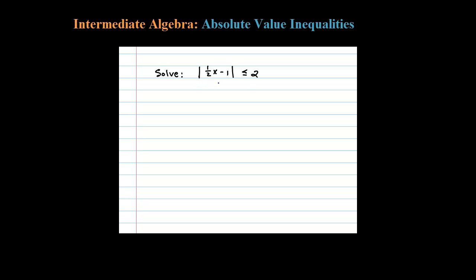We're asked to solve this absolute value inequality. Using case 2 of the theorem, thinking of the absolute value as the distance from 0, we want the distance from 0 to be less than or equal to 2. So in other words, the argument has to be in between negative 2 and 2.